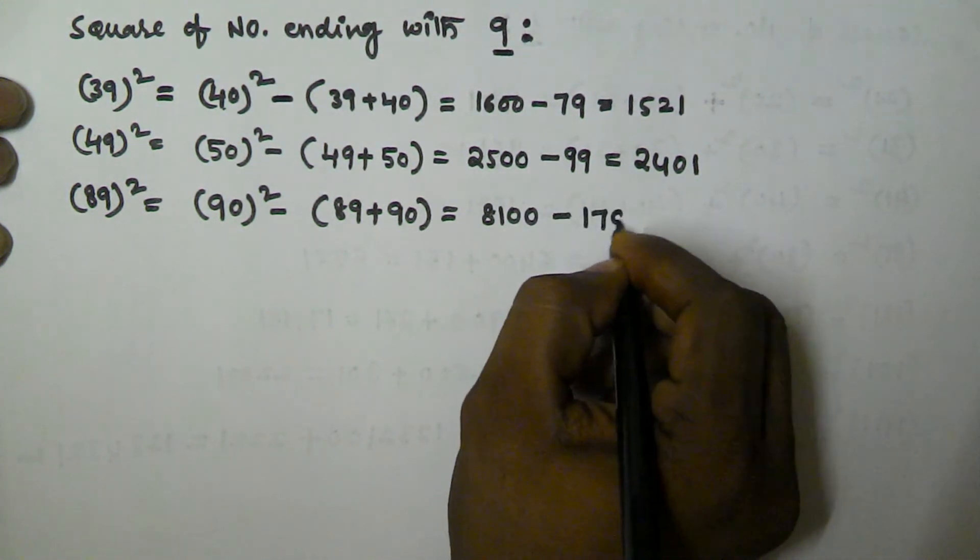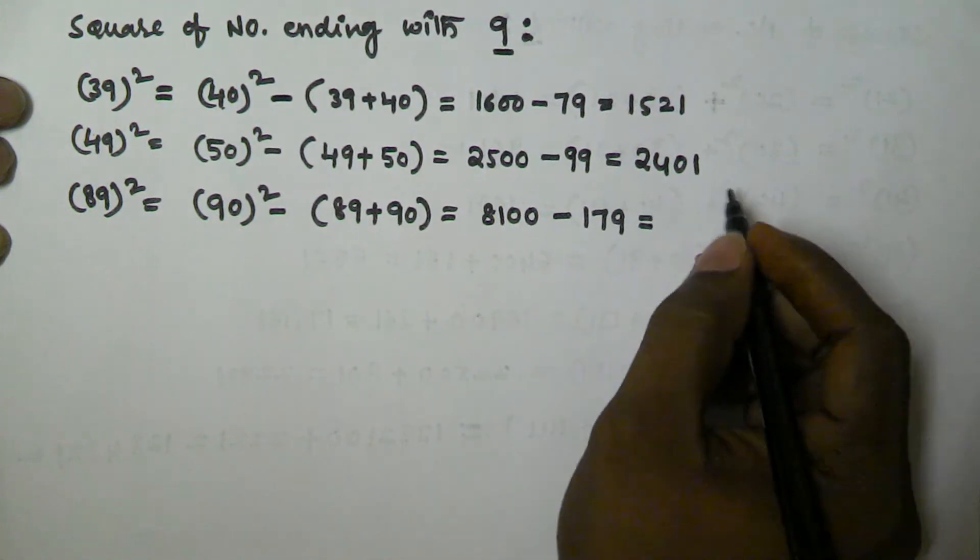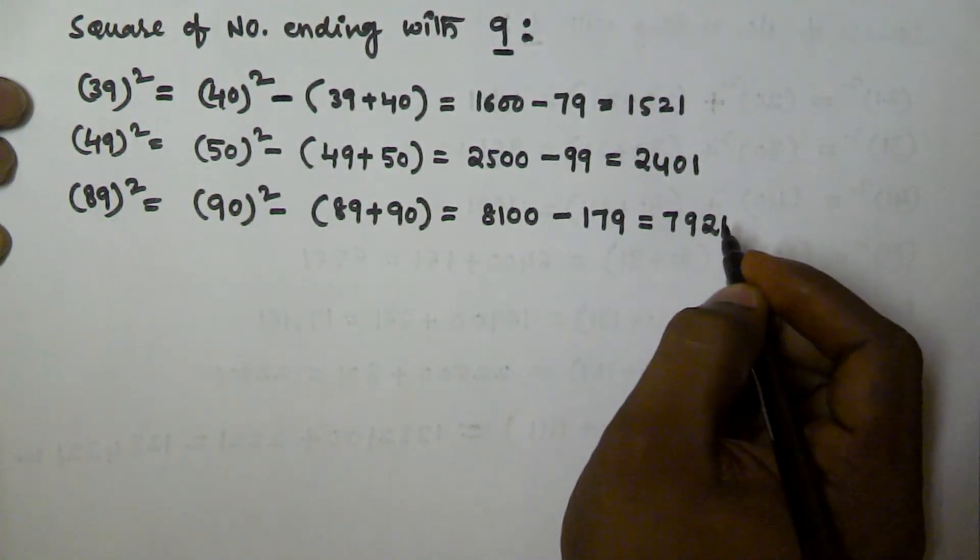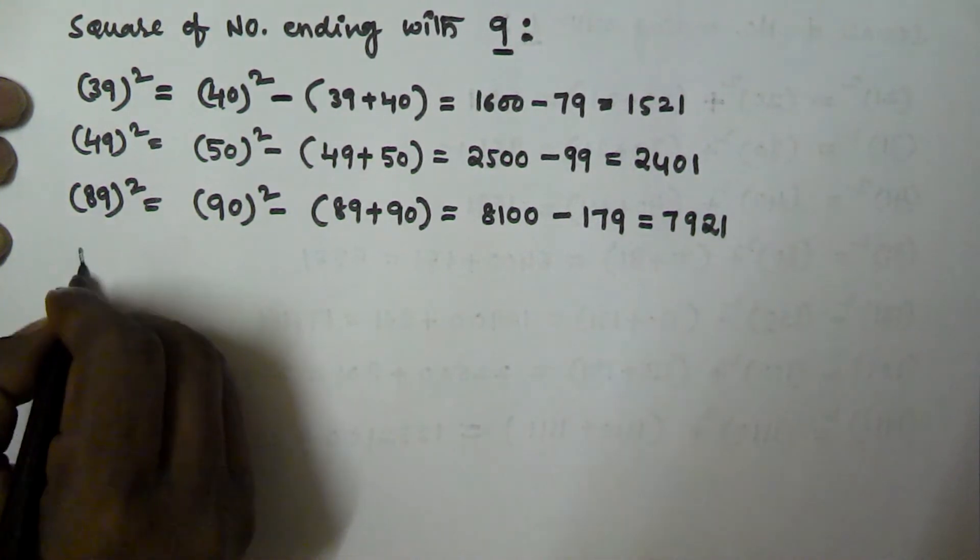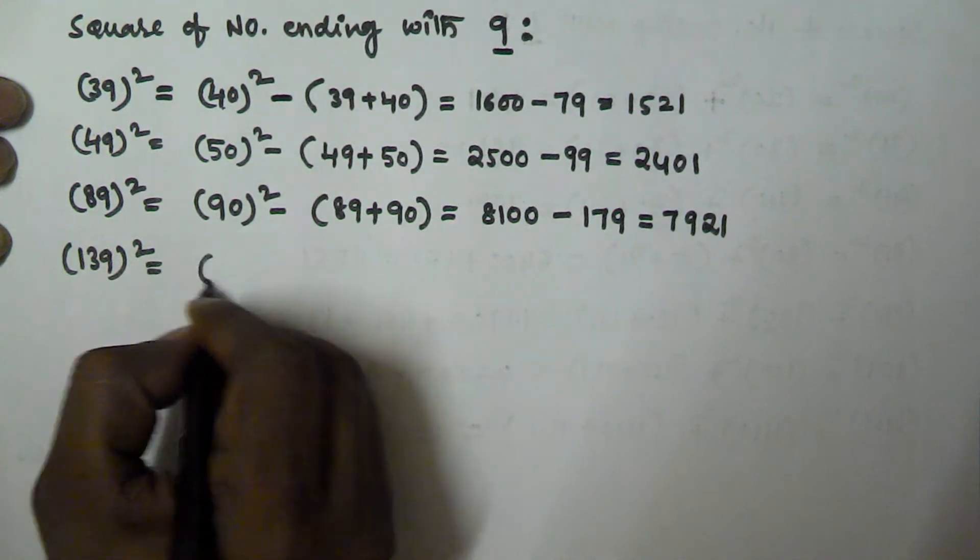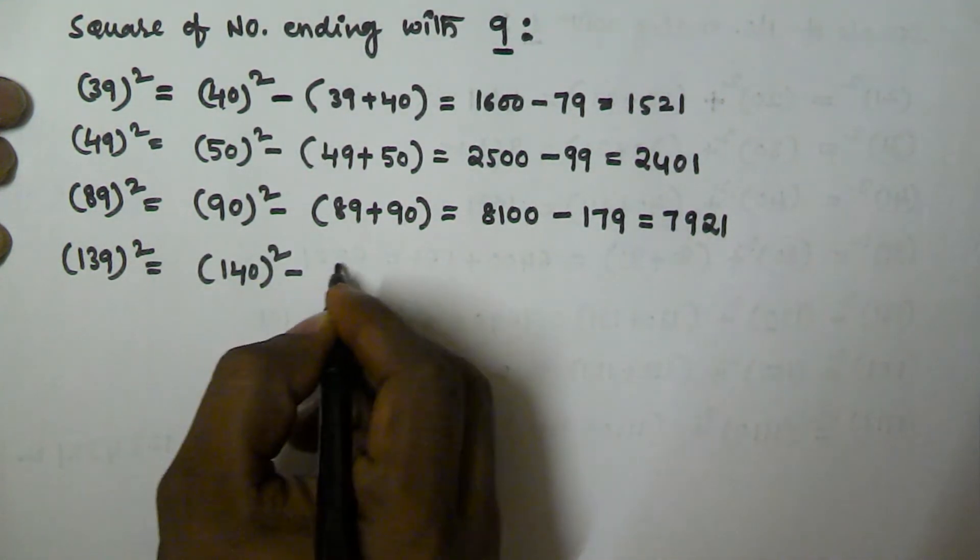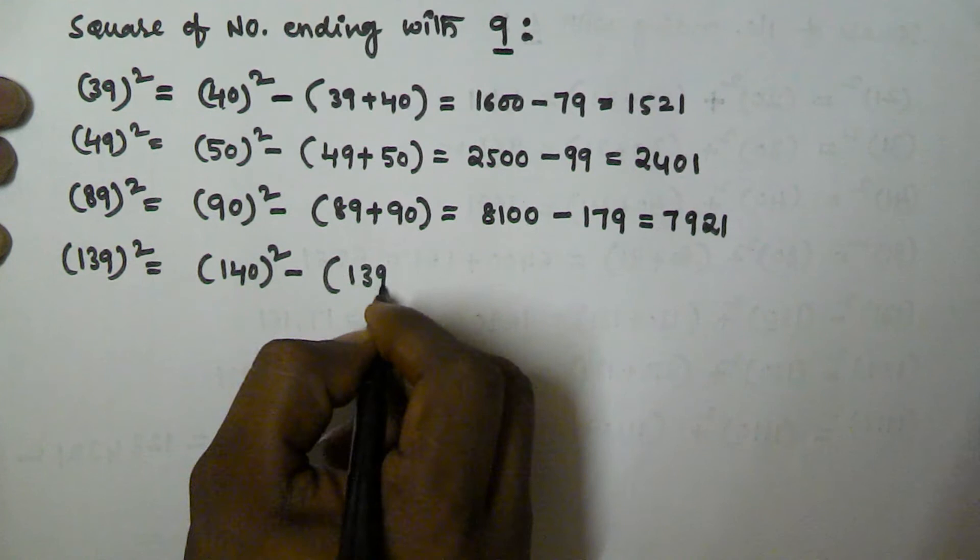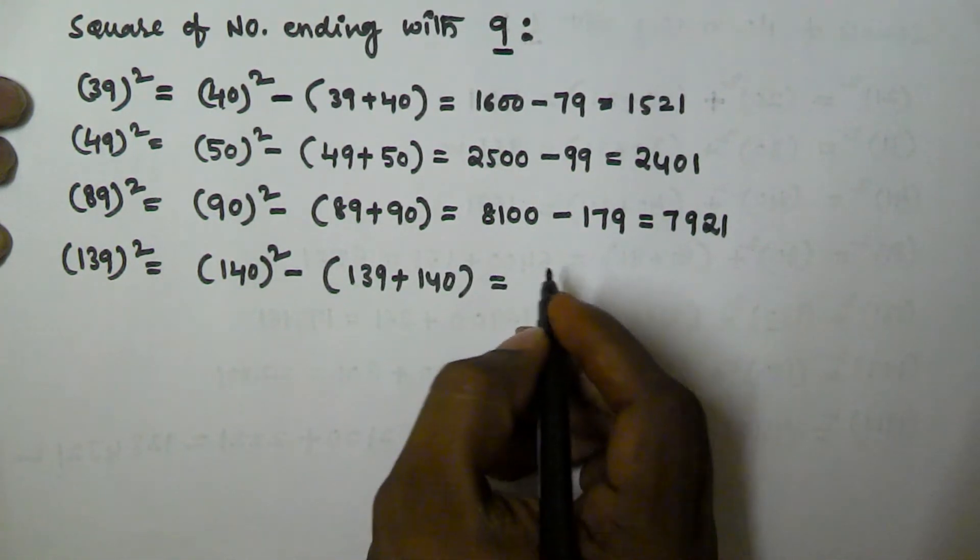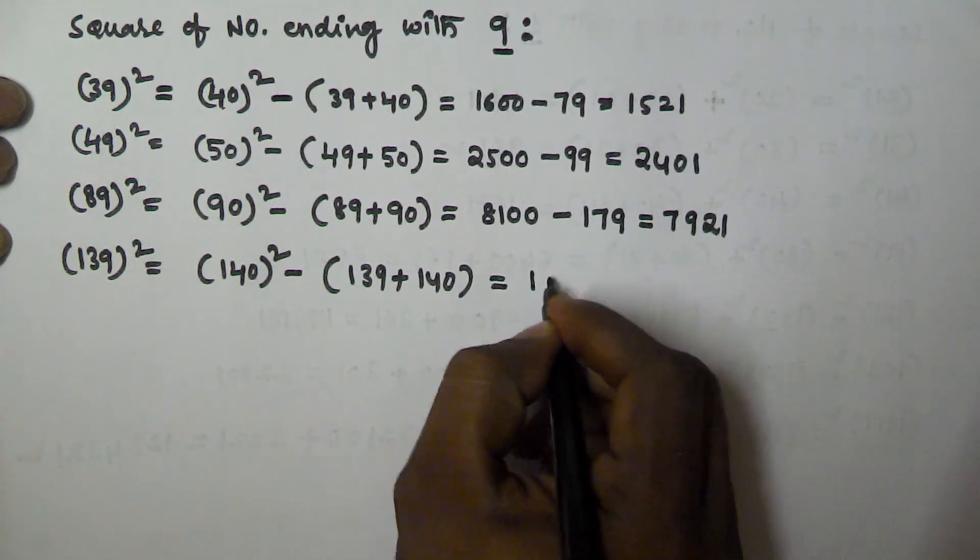This is equivalent to 7921. So in the same manner, 139 square is equivalent to 140 square. 14 square is 196 and double 0.